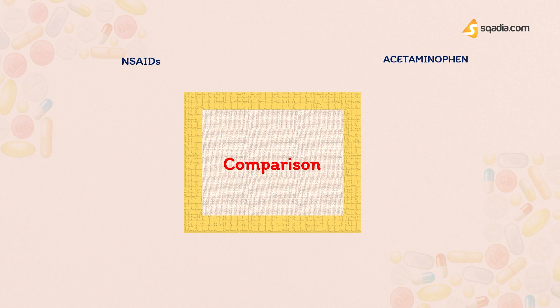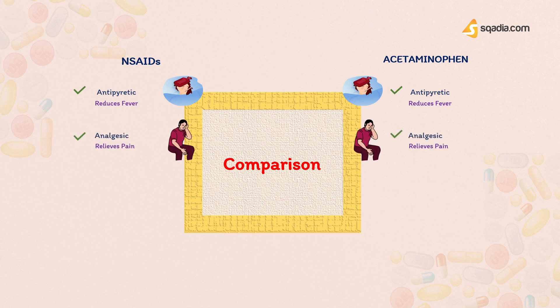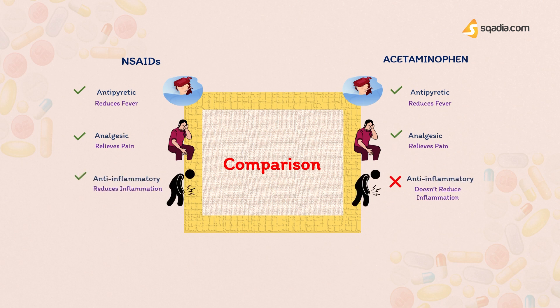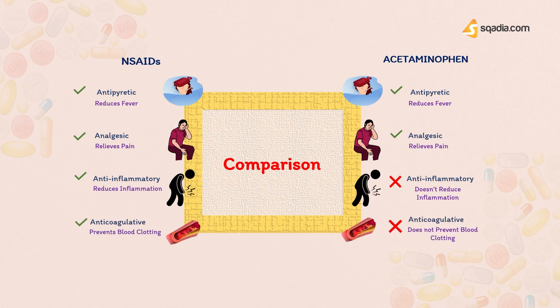For example, acetaminophen is antipyretic — it reduces fever — and it has analgesic properties, meaning it relieves pain. However, it lacks anti-inflammatory properties, as it does not reduce inflammation, and anti-coagulative activity is also lacking, meaning it does not prevent blood clotting. Because all these properties are commonly associated with NSAIDs, acetaminophen is not considered to be an NSAID.